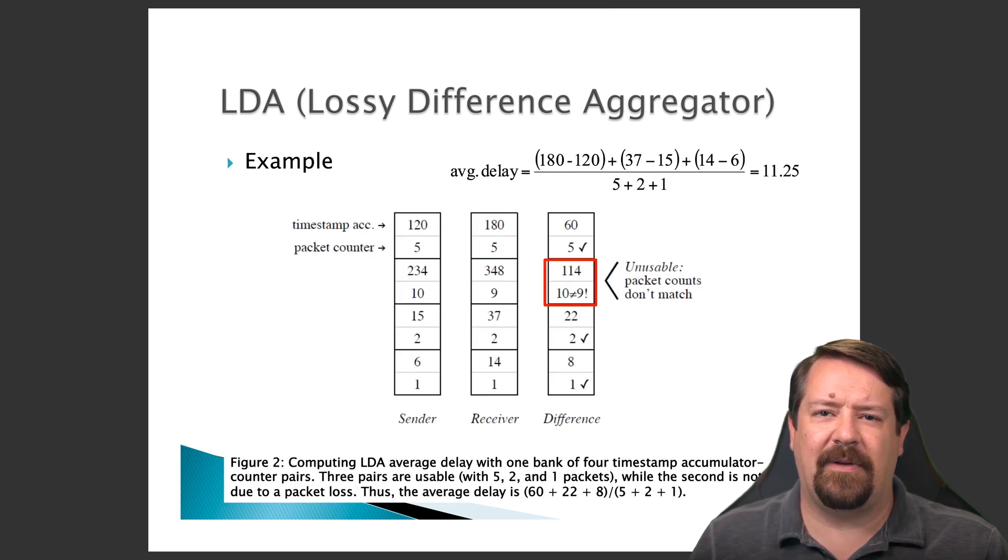So here's a simplified example of our lossy difference aggregator. The sender side counts packets and accumulates timestamps, and we see on the receiver side that the timestamps are all higher because those packets arrive later in time. And it can compare the two, and as long as the packet count is the same, it's able to get a difference in timestamps and estimate the delay between the two devices.